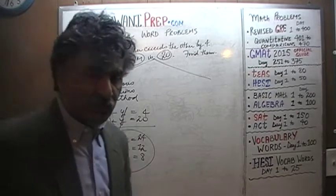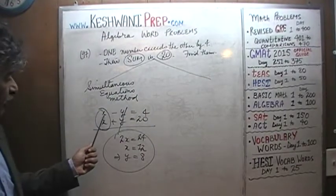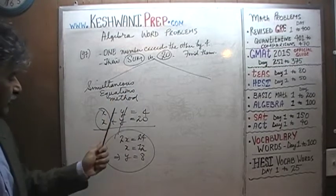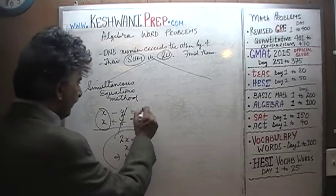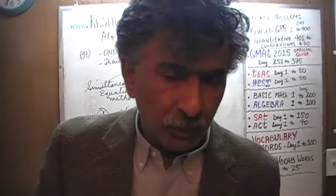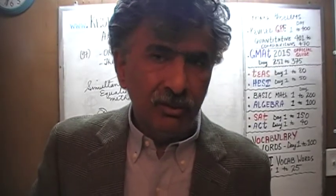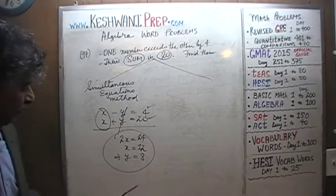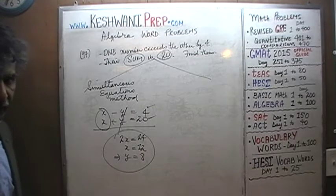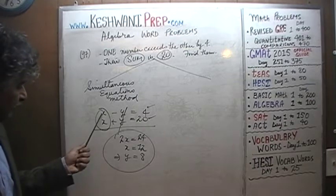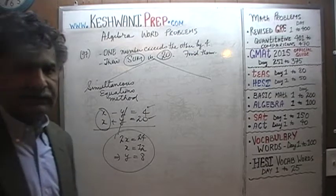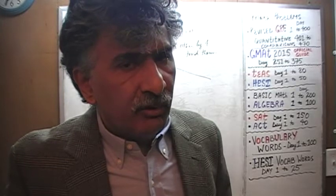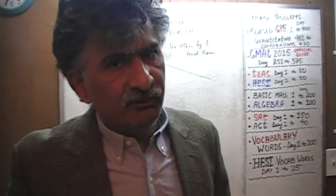Why is it called the simultaneous equations method? Because these two equations — x minus y equals 4 and x plus y equals 20 — are known as simultaneous equations. Whatever values we claim for x and y, those values have to satisfy the first equation and the second equation at the same time — simultaneously — hence the simultaneous equations method.